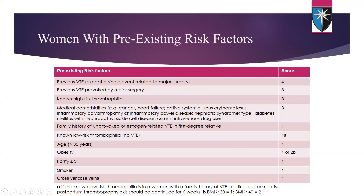A score of one is given for: family history of unprovoked or estrogen-related VTE in a first-degree relative; non-low-risk thrombophilia; age over 35 years; obesity; parity of three or more; smoking; and gross varicose veins.